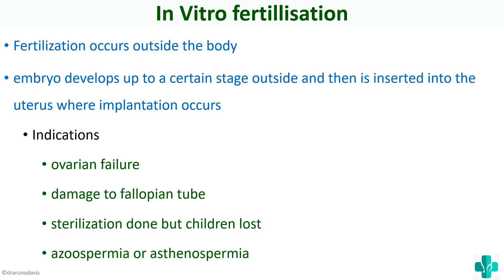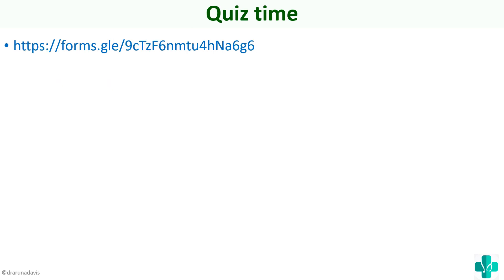So when a question on assisted reproductive technologies comes, you have to write about three: first, ovarian stimulation; then artificial insemination; and in vitro fertilization. There are many other technologies in ART, but these are the basic ones you should know. In the description box I have also inserted a Google form with multiple choice questions based on infertility and its treatment — you can answer them and evaluate yourself. That's all, I hope this concept is clear. Thank you.